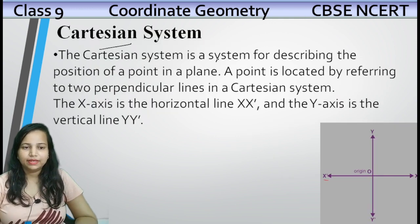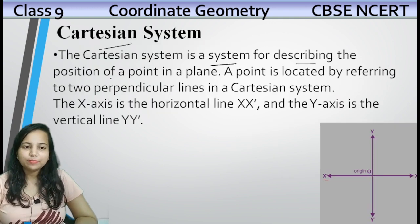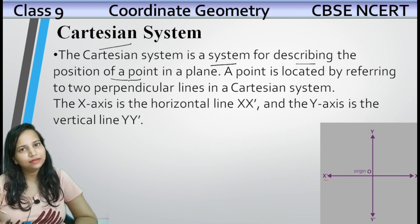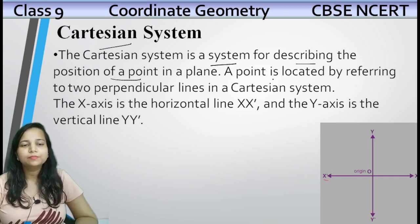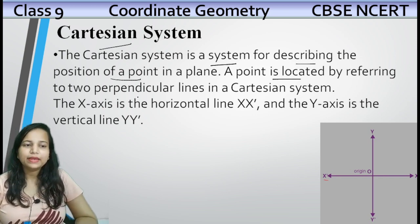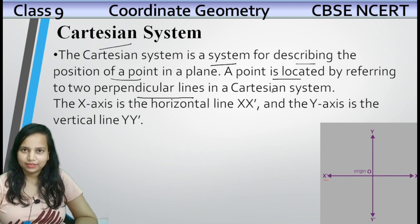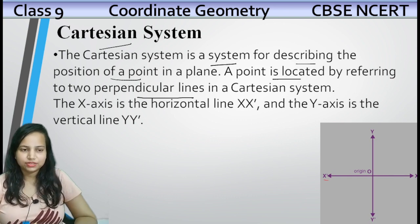Cartesian system kya hai? It is a system for describing the position of a point in a plane. A point is located by referring to two perpendicular lines in a Cartesian system.